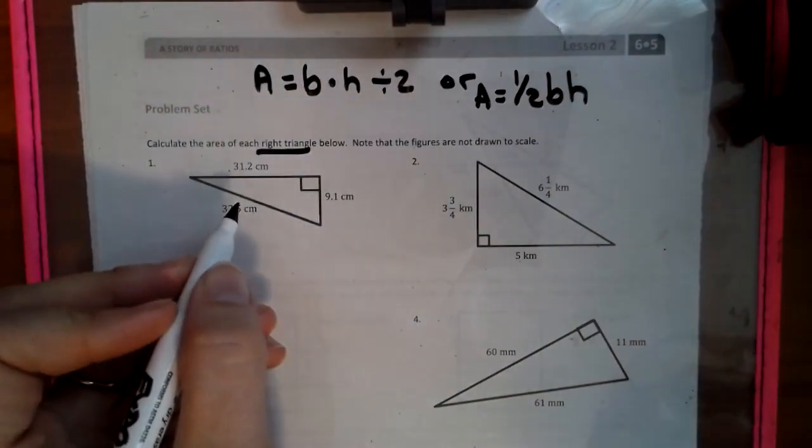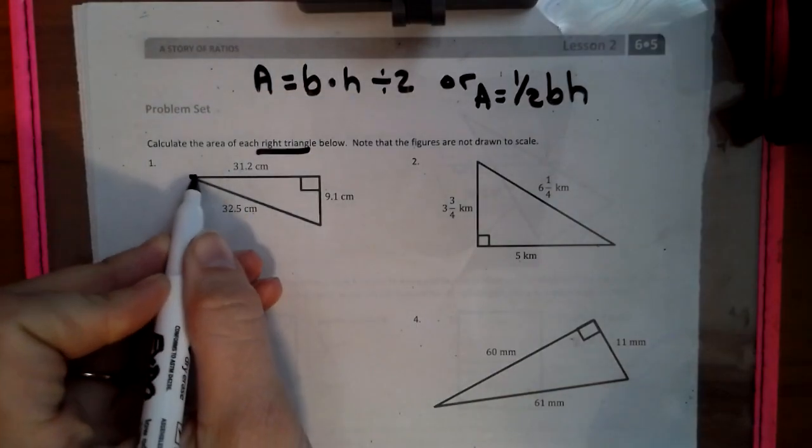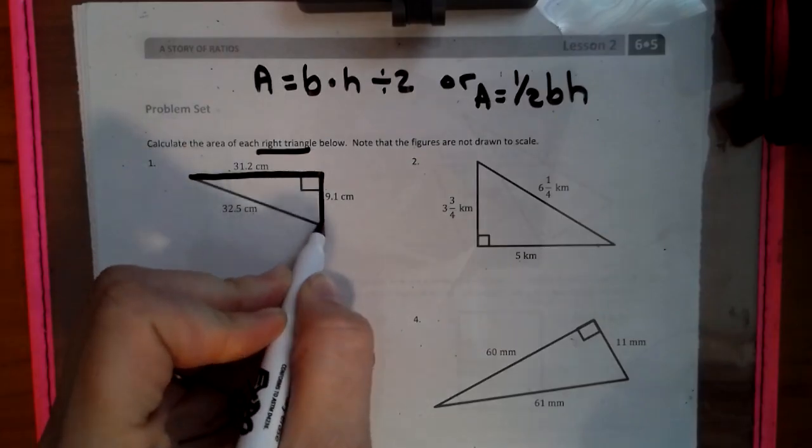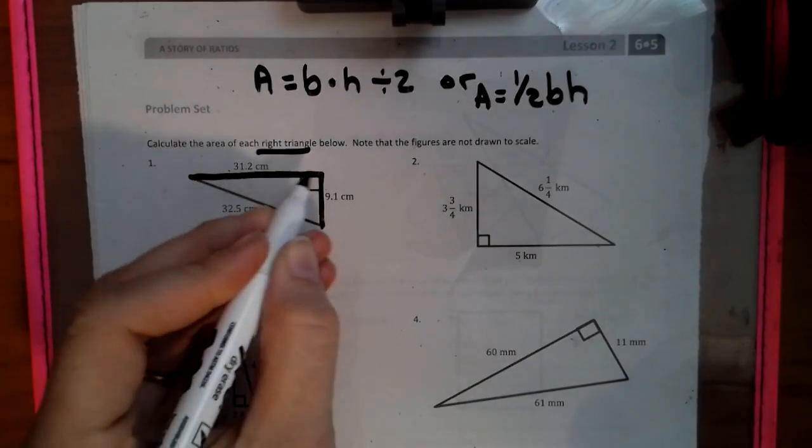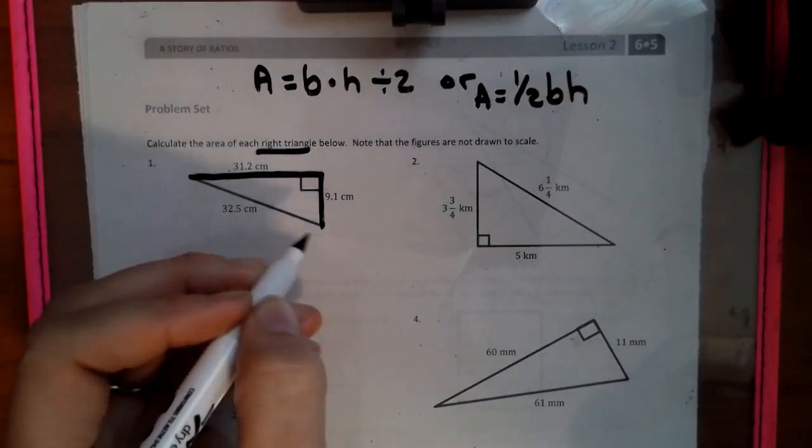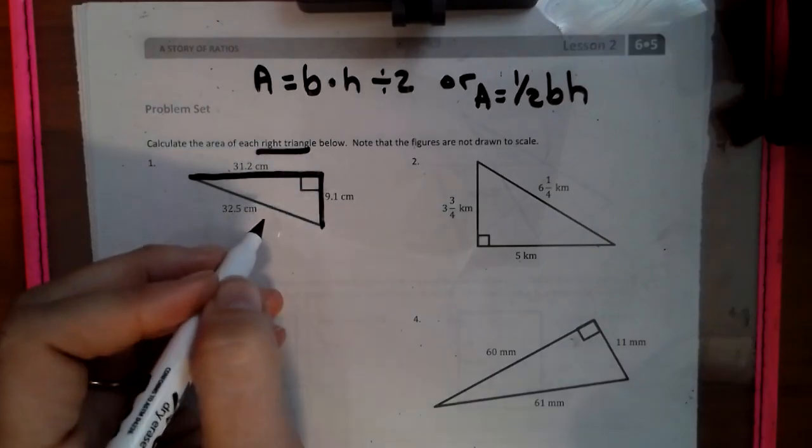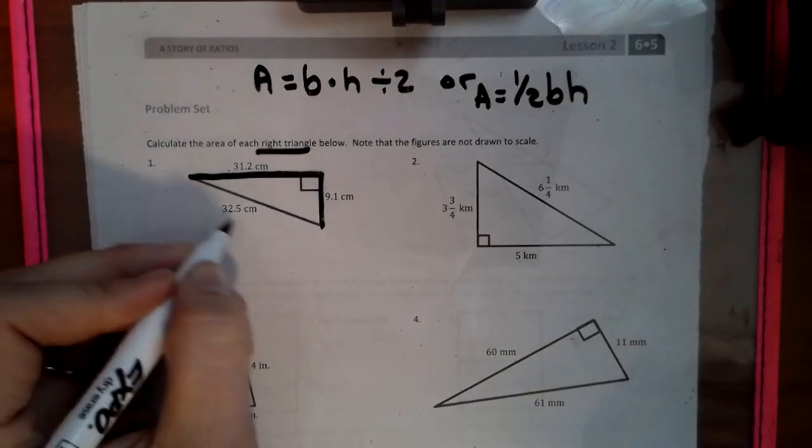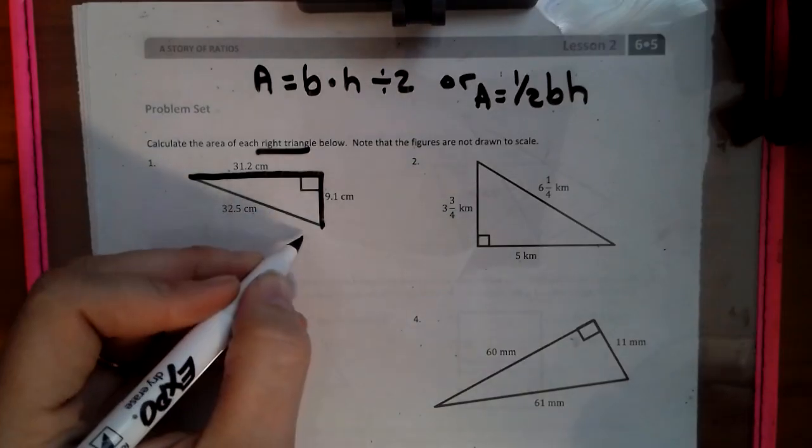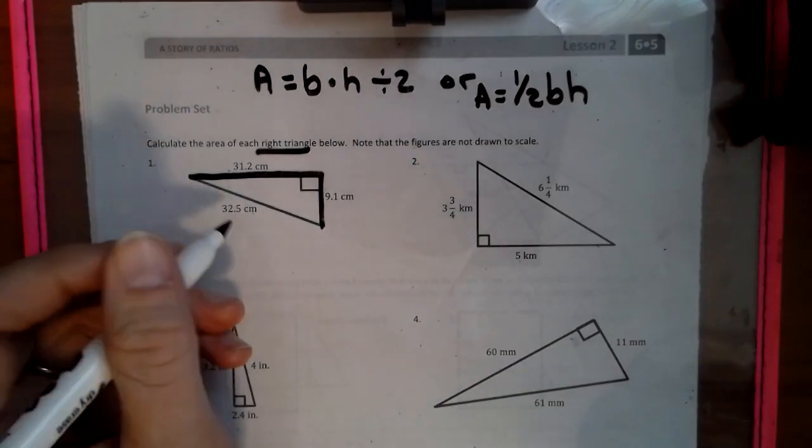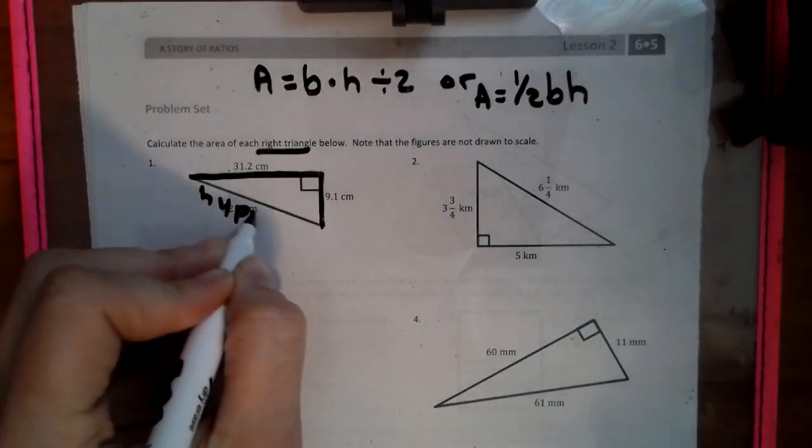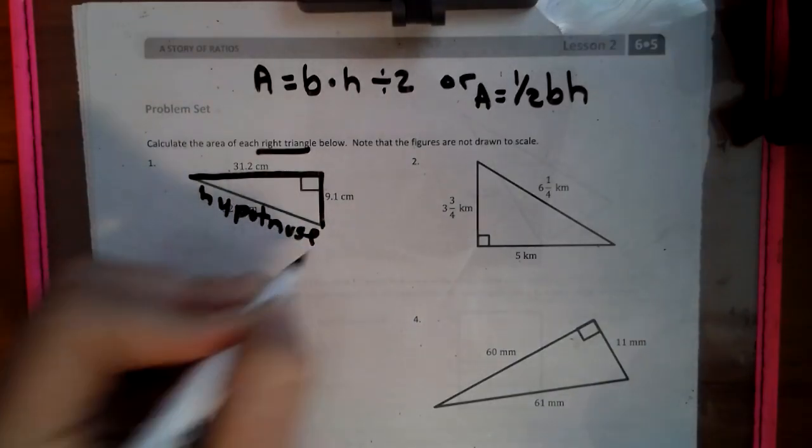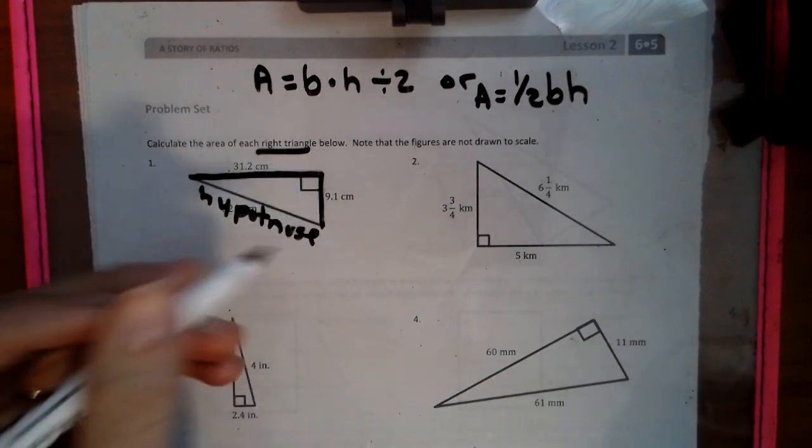So the base and the height on a right triangle are the two sides that form the 90 degree angle. So base and then the height. This triangle looks like it's upside down. This slant side is called the hypotenuse, and we don't need the hypotenuse. So we need the base and the height.